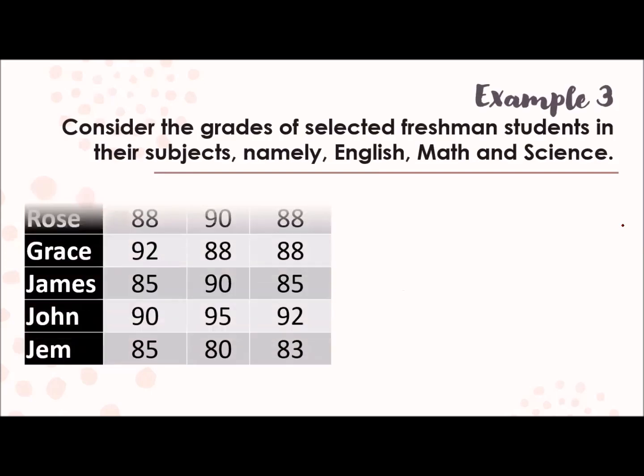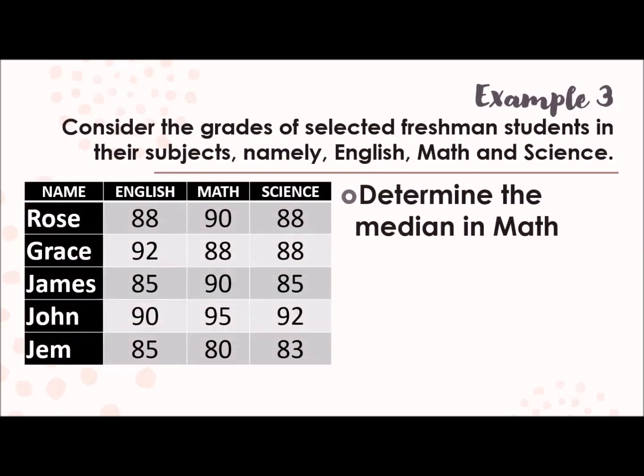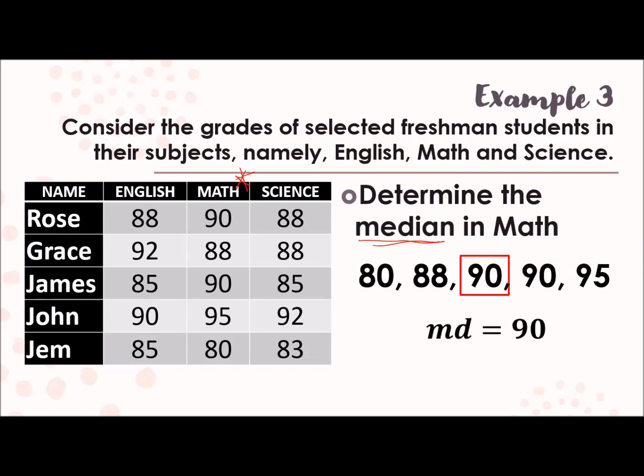Next one. Determine the median in math. Median. That means, the one in the middle. So here in mathematics, we need to arrange the scores from lowest to highest, which are 80, 88, 90, 90, and 95. What's the one in the middle? So the answer here is 90.